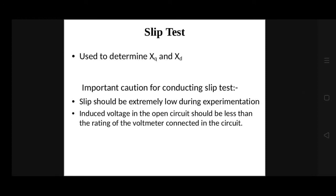Now let us discuss how to find the values of XD and XQ using the slip test. The slip test is carried out on a salient pole machine and there are some important cautions for conducting it. First, the slip should be extremely low during experimentation. In the case of high slip — more than about 5% — the following effects may be observed: current induced in the damper winding will produce an appreciable error, and the induced voltage in the open circuit field may reach a dangerously high value. It should also be assured that the induced voltage in the open circuit is less than the rating of the voltmeter connected in the circuit.